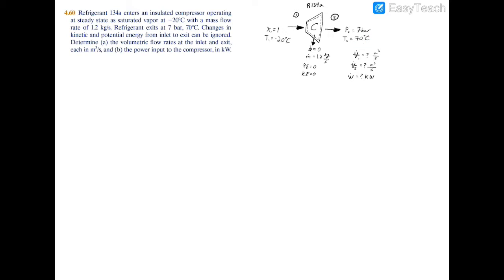The mass flow rate is 1.2 kilograms per second, and potential and kinetic energy can both be ignored. We're asked to find the volumetric flow rate at the inlet and at the exit, both in cubic meters per second, and also the power input of the compressor in kilowatts.